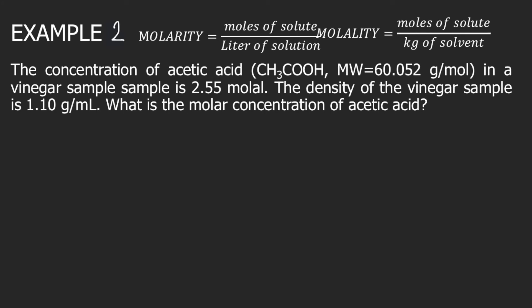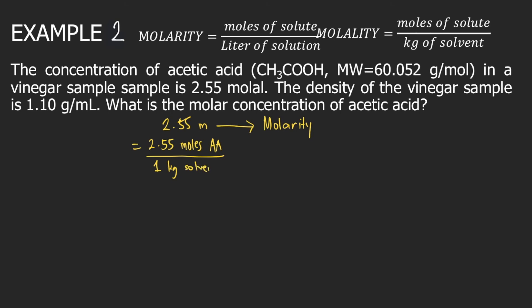Let's try our second example. The concentration of acetic acid in a vinegar sample is 2.55 molal. The density of the vinegar sample is 1.10 grams per mL. What is the molar concentration of acetic acid? This time we are given 2.55 molal, and we will convert this to molarity. So 2.55 molal is equivalent to 2.55 moles of acetic acid per 1 kg of solvent.